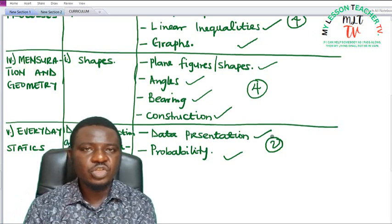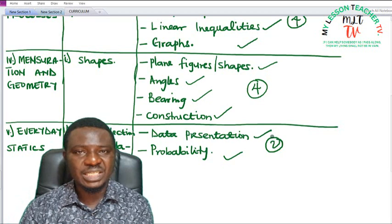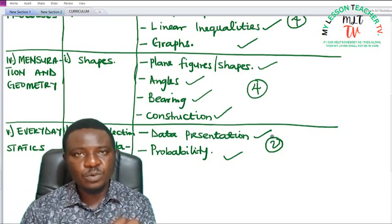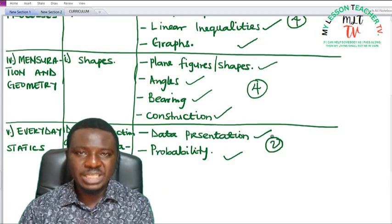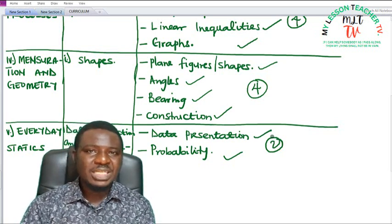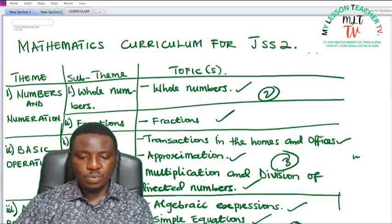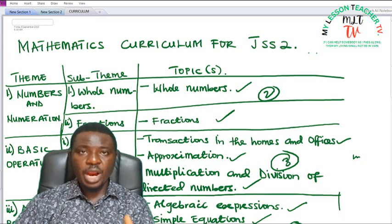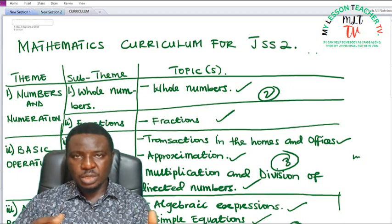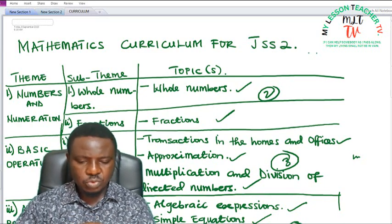Now, what happens when you didn't finish your curriculum in GSS1? There is going to be a gap — a vacuum between GSS1 and GSS2. So it is appropriate that you go back to GSS1 and finish all the topics you were supposed to treat in GSS1 before treating those in GSS2. This channel is here to help you bridge that gap between the topics in GSS1 and GSS2, covering up all the topics that were not done.